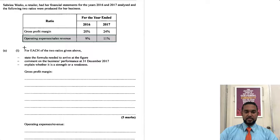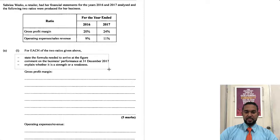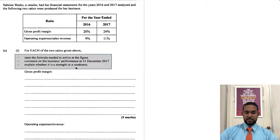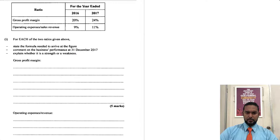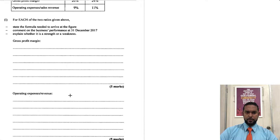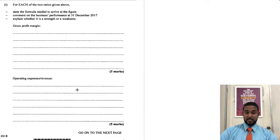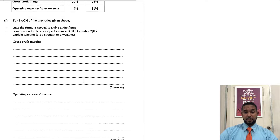So it says for each of the two ratios given above, we have to: state the formula needed to arrive at the figure, comment on the business's performance at 31st December 2017, and explain whether it is a strength or a weakness. The gross profit margin is five marks, and same thing for the OPEX margin.